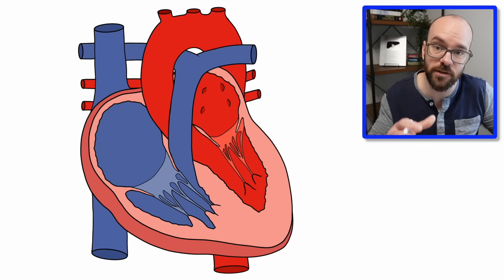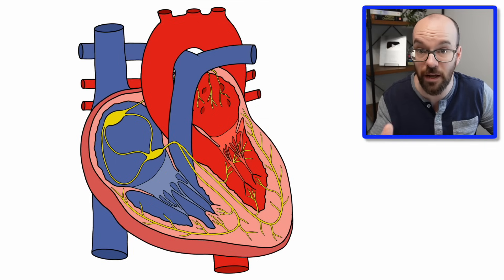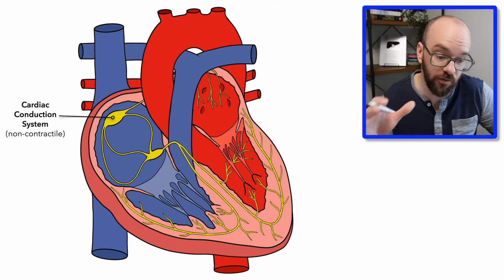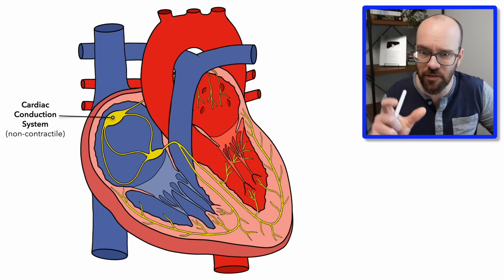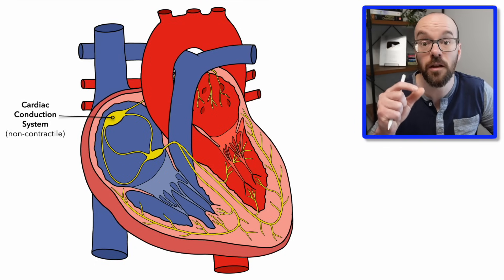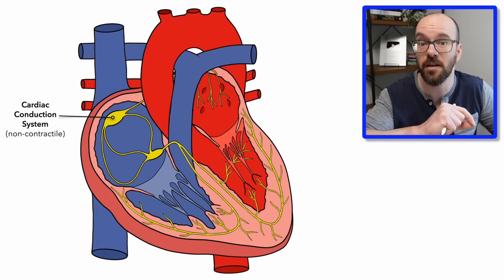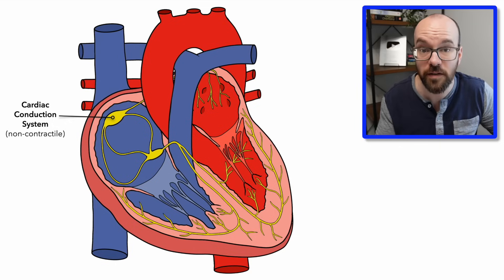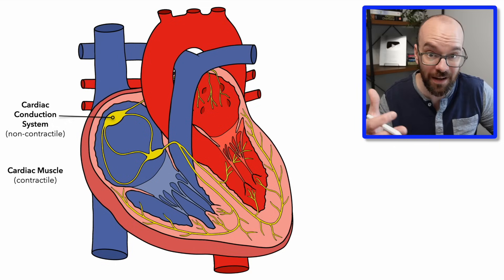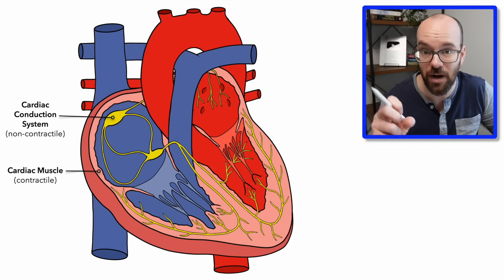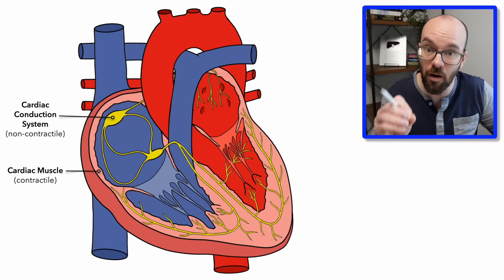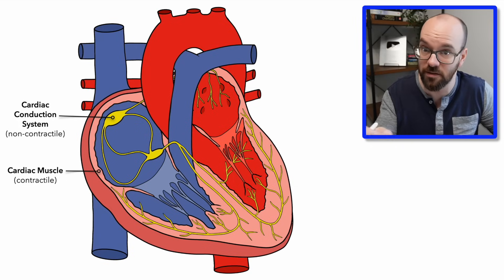There are three types of tissue concerned with this video. First, the cardiac conduction system — shown in yellow on the diagram — which is non-contractile cardiac tissue. These aren't muscle cells that contract; they're more like nervous tissue conducting signals throughout the heart. Second, we have cardiac muscle tissue, which is contractile tissue that contracts and pumps blood, but also conducts signals.